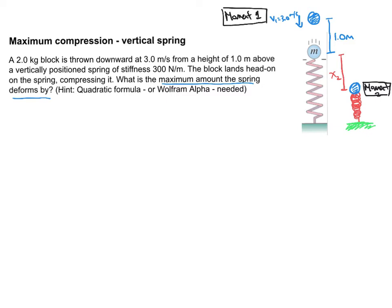And this is a conservation of mechanical energy. There's no non-conservative forces doing anything here. It's just gravity and elastic force. So K1 plus gravitational potential 1 plus spring potential 1—so that's the starting mechanical energy—has to equal the ending mechanical energy. So kinetic 2, gravitational potential 2, and spring potential 2.